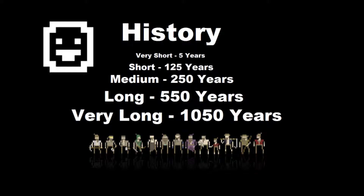Next we're going to look at history. You get the choice between very short, short, medium, long, and very long — 5, 125, 250, 550, and 1,050 years each. By choosing a longer time it takes longer for the world to be made because it has to simulate everything happening. A longer time gives civilizations time to set up and get established. History also creates mega beasts. I would really recommend, if this is going to be your first world, go with short, which is 125 years. That will give enough time for civilizations to get established but not so long that everything's already been killed off.